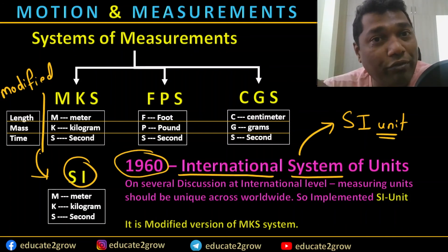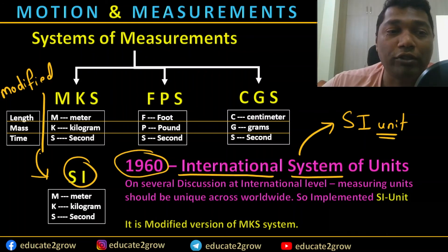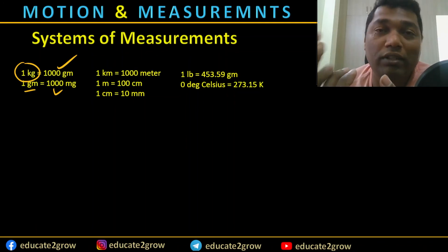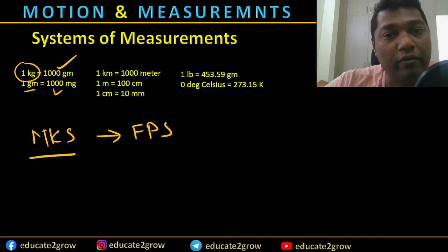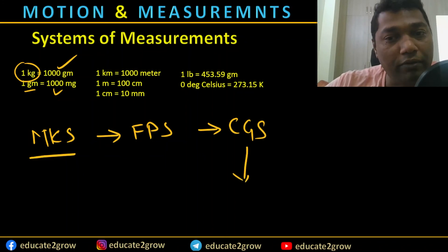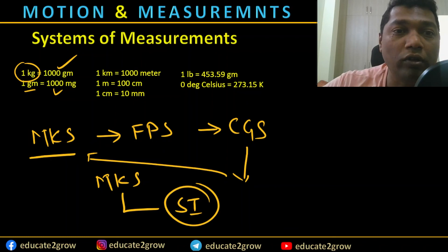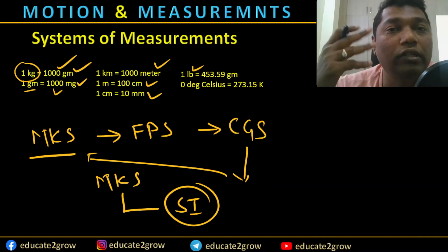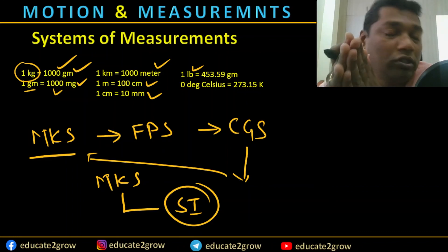From 1960 onwards, people started using SI units, although America, Burma, and Liberia still use FPS with conversion factors to SI. The conversion factors used in practice include one kilogram equals 1000 grams, and one gram equals 1000 milligrams. To conclude, the journey went: MKS, then FPS, then CGS, then back to MKS, and later changed to SI. During this time, all units — grams, milligrams, meters, centimeters, millimeters, pounds — were invented and standardized for use in the measuring system.